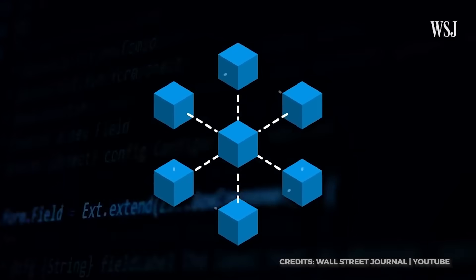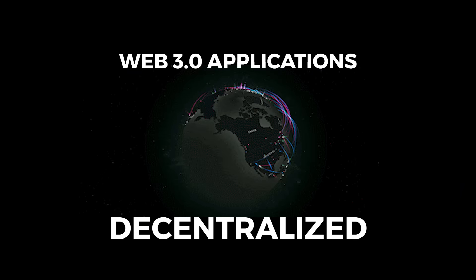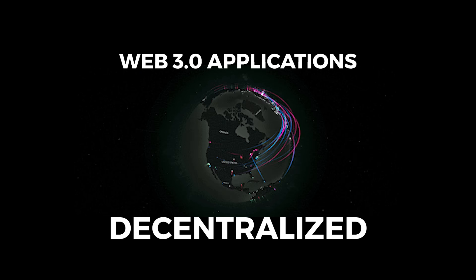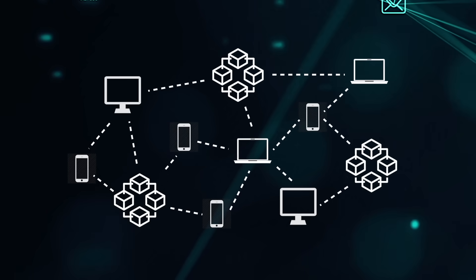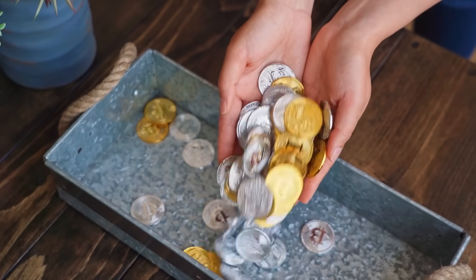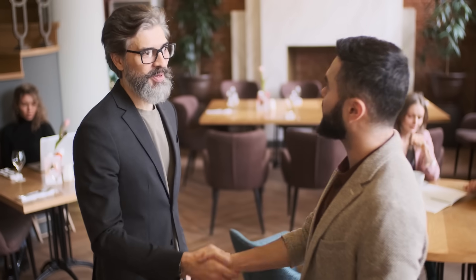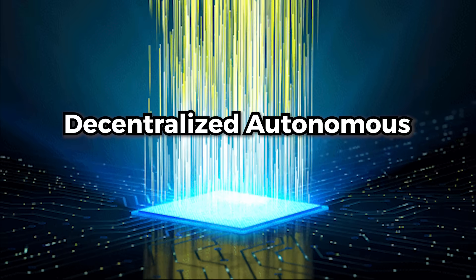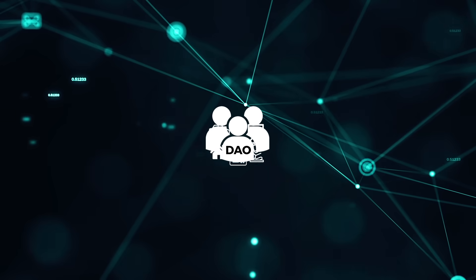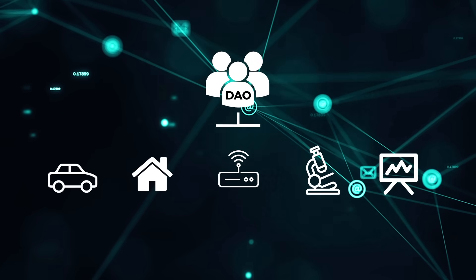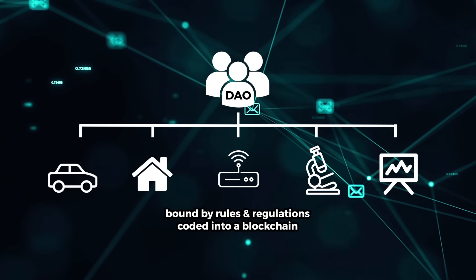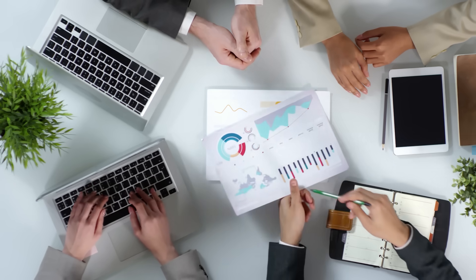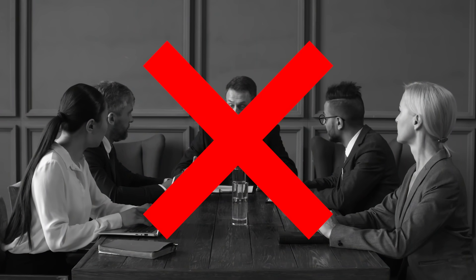Blockchain technology ensures that data is encrypted and stored in multiple distribution centers. Due to the decentralized nature of Web 3.0, it's possible to be more than just consumers or customers. With enough tokens or cryptocurrencies, you can also become shared stakeholders of a decentralized network and have a say over how things should be run. You may also be part of a decentralized autonomous organization, or DAO — a loosely organized collective with a flat hierarchical structure, bound by rules and regulations coded into a blockchain.